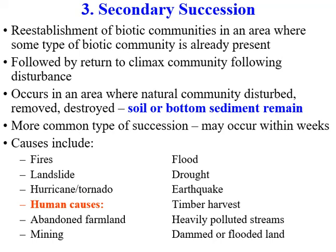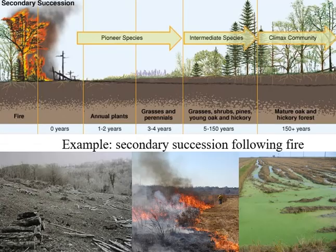Humans cause a lot of community disturbances. After disturbance, there's still some soil, some sediments, some microorganisms and living things remaining. Community members show up again, are present for a while, then are altered over time until eventually you reach a climax community. So in secondary succession, it's not bare rock or a brand new island, but some habitat that's been disturbed by those causes.